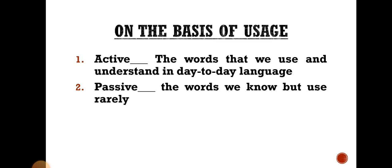Active vocabulary includes the words that we use and understand in day-to-day language — words whose meaning and usage we know, and which we use very frequently. That's why it is called active vocabulary. Passive vocabulary includes the words we know how to use but use rarely. Many words are not used in our daily routine — those come under passive vocabulary.